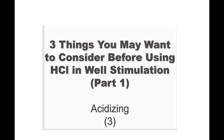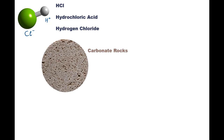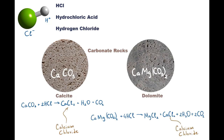Hello everyone. Today I will talk about ways in which you can damage your formation and equipment during well stimulation using hydrochloric acid. HCl is the main acid that we use to stimulate carbonates. Here you can see samples of calcite and dolomite. When they react with HCl, products of the reaction are calcium and magnesium chloride, water, and carbon dioxide. These salts are soluble in water and are easy to remove after the acidizing job.